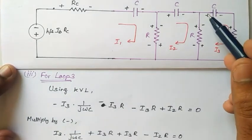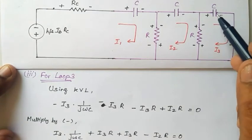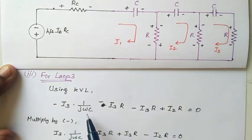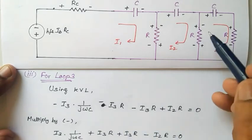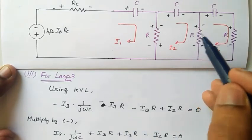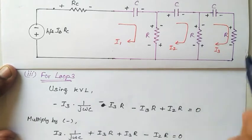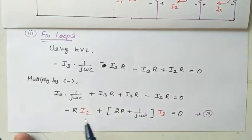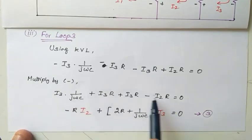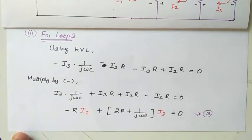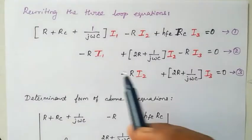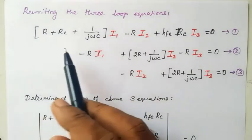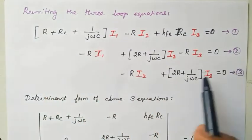For loop 3, applying KVL starting here: minus I3·(1/jωC), then I3·R, then I3·R again, with opposing current I2·R. We have four terms. Multiplying through by minus, and rearranging for I1, I2, I3 — since there is no I1 term here, only I2 and I3 are present — this becomes Equation 3. So I have formed Equations 1, 2, and 3, which are rewritten here for convenience.